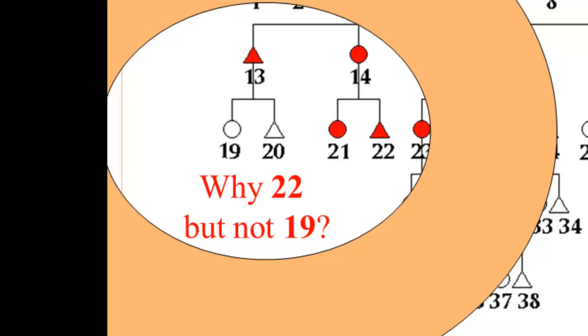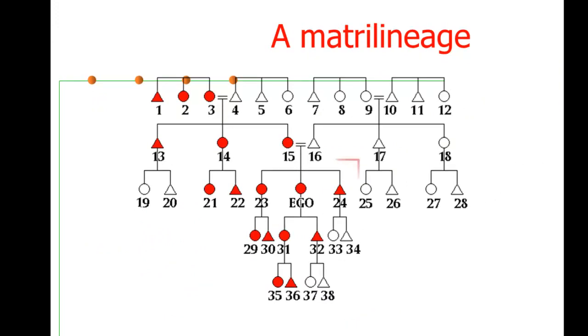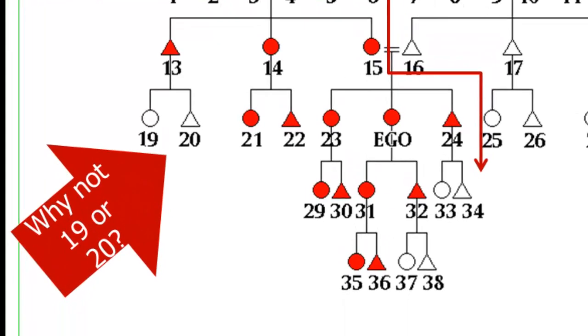And the answer here is just as with patrilineal descent. It has to do with the gender of their parent. So 14 is female, and so the line flows on through her to her daughter and her son, whereas 13 is male, and so the line stops with 13. And this points up a key thing to note. We often think about patrilineal and matrilineal as meaning mother's side and father's side, but that's not really accurate. If it were accurate, again, we have this question,